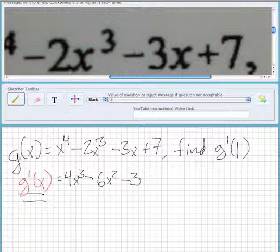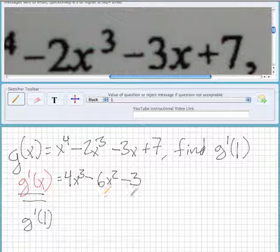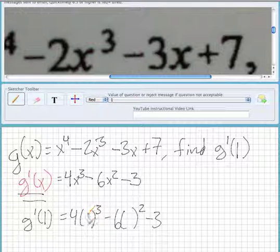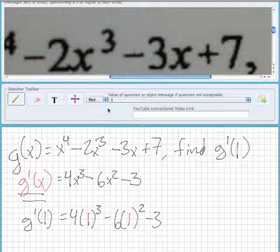Now we're trying to find g'(1), so we're substituting 1 in for all the x's. That gives us 4 times 1 cubed minus 6 times 1 squared minus 3, and we're plugging in 1 for each of those.